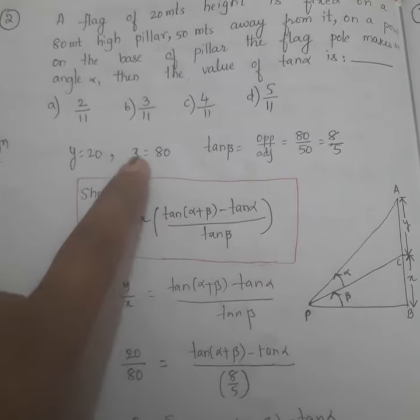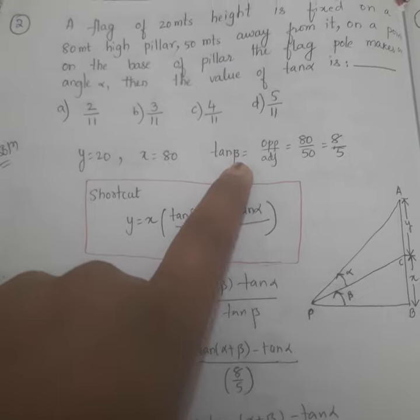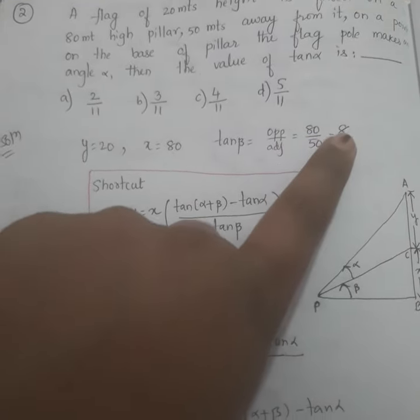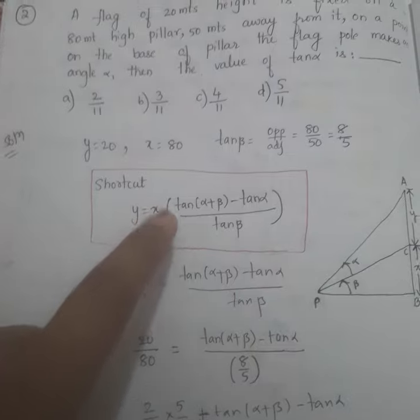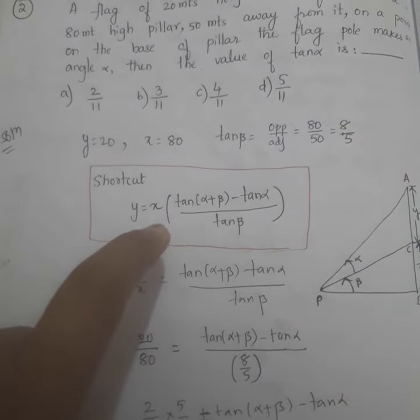Where Y is nothing but 20, X is nothing but 80, tan beta value is nothing but opposite by adjacent, that is 80 by 50, that is 8 by 5. Then we have to substitute all these values in this equation.